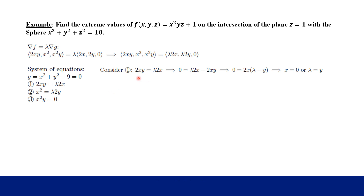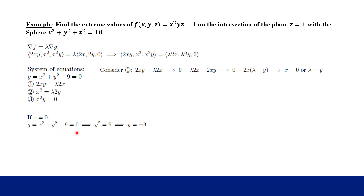Starting with equation one, we subtract 2xy to the other side and factor out 2x. This gives us the product 2x · (λ − y) = 0, so either x = 0 or λ = y. We explore the first possibility: if x = 0, we plug that back into the constraint equation x² + y² − 9 = 0, giving us y² = 9, so y = ±3.